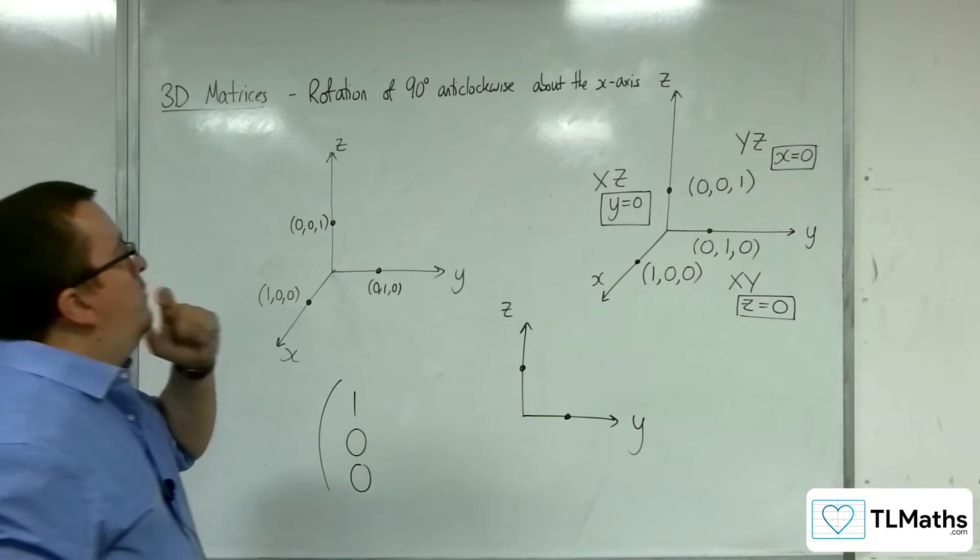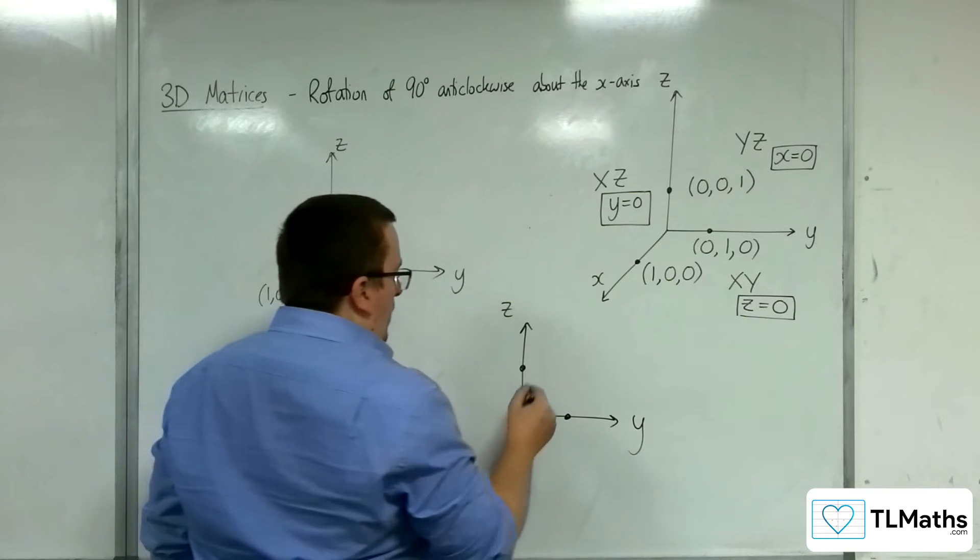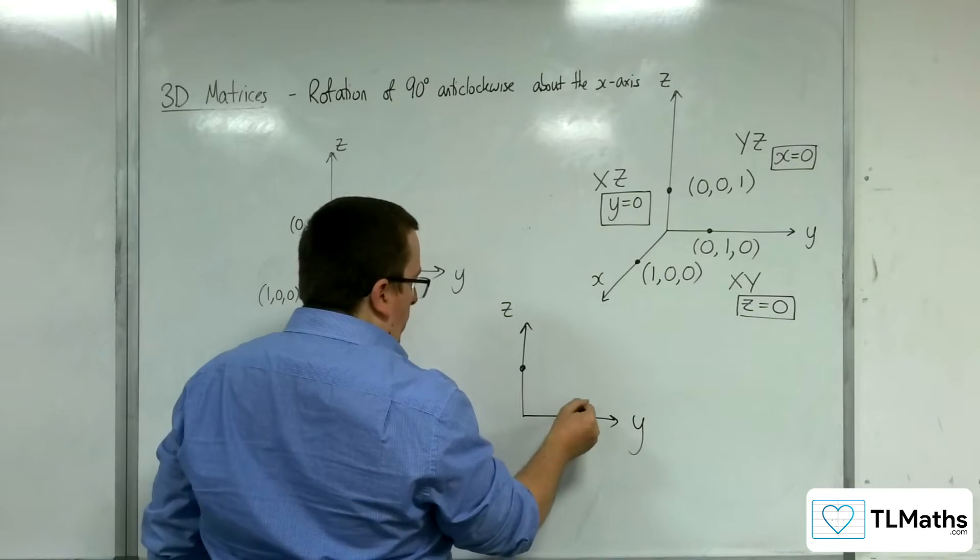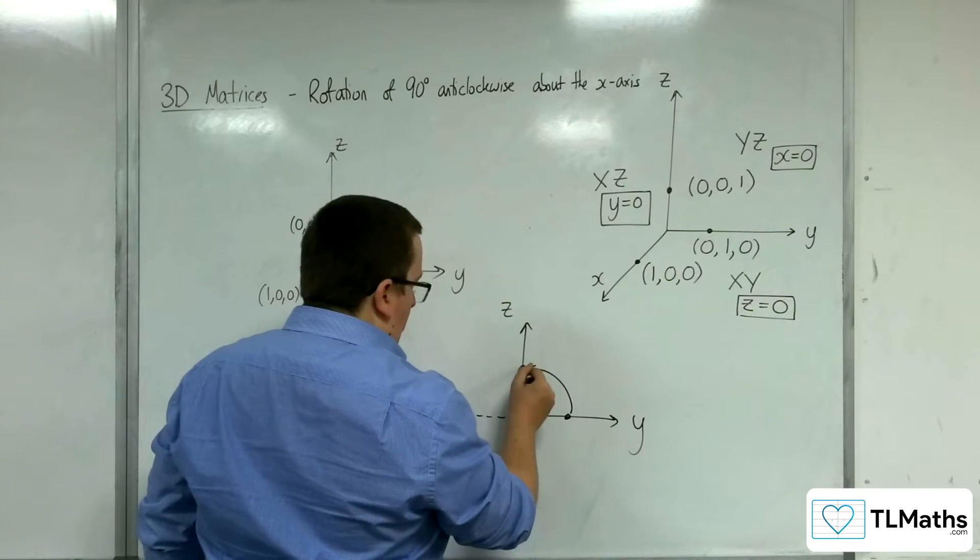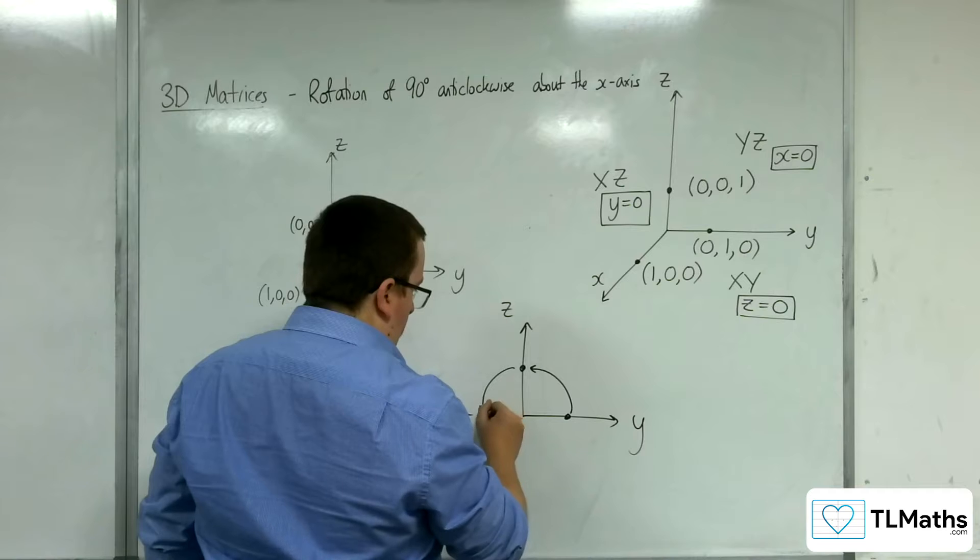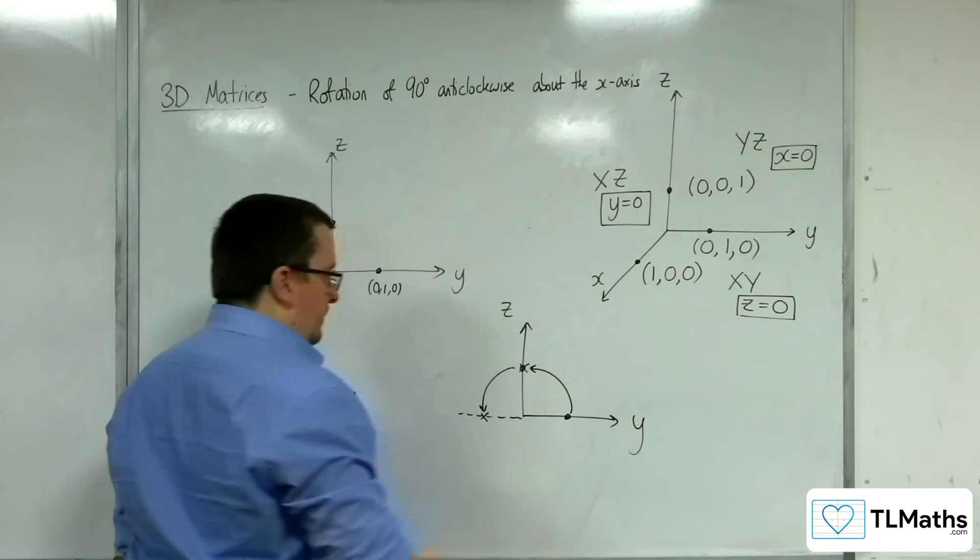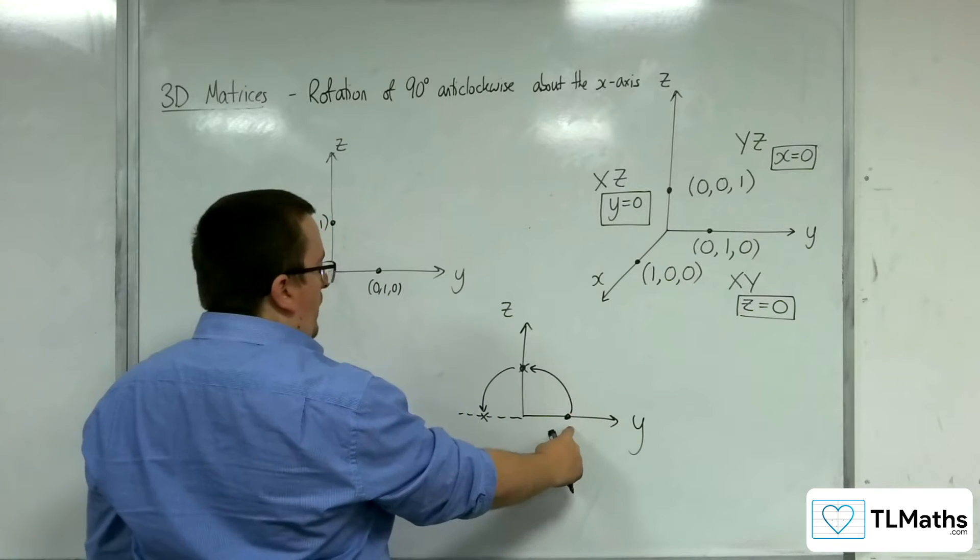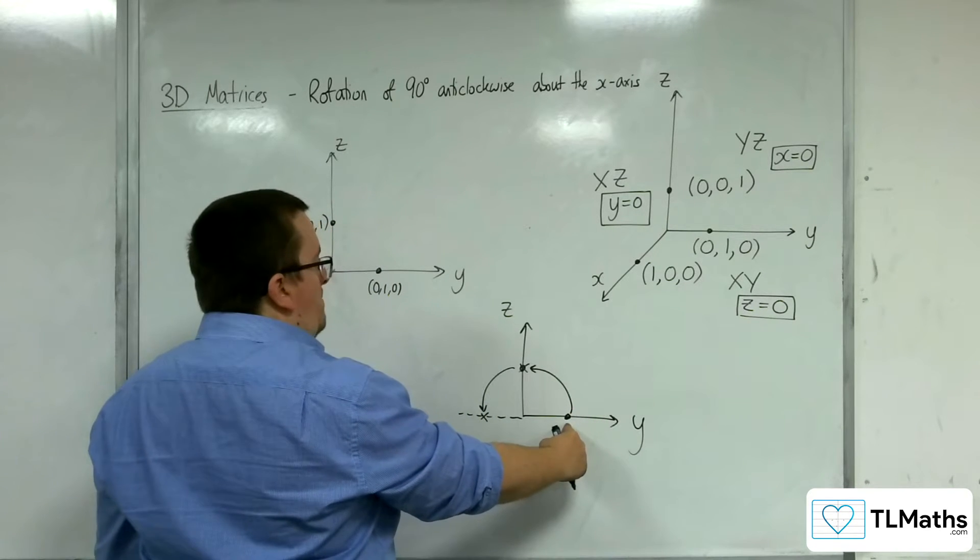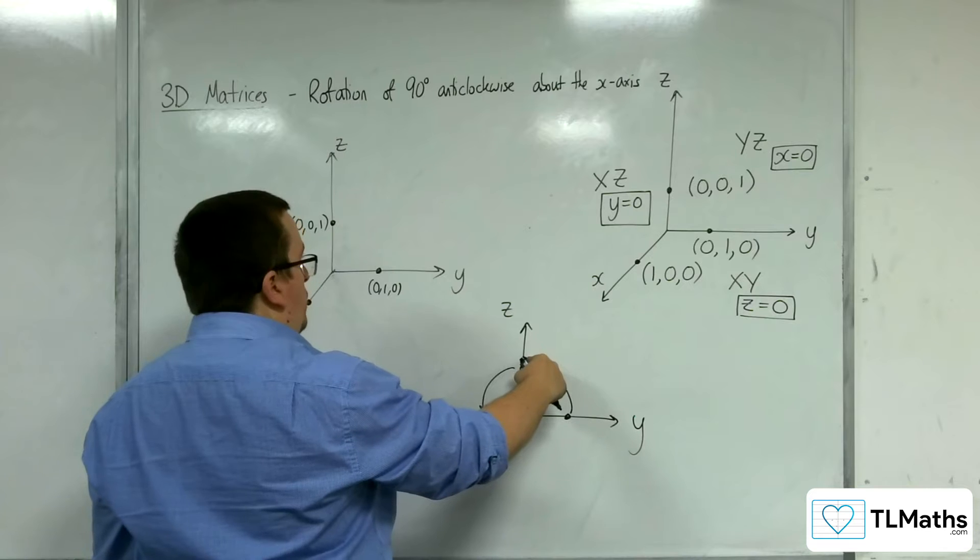So, if you are rotating 90 degrees anticlockwise, what will happen is that this point will go there, and this point will go here. So that means that 0, 1, 0 will be mapped to 0, 0, 1.